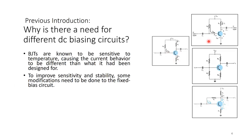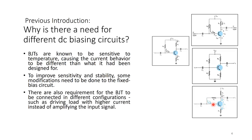The previous video covered this simple fixed bias circuit. What we will do throughout this video and future videos is: first, add a resistor at the emitter; then add another resistor between the base and ground; and later look at what happens with a resistor from the base to the collector. There are also requirements for BJT to be connected in different configurations, such as driving a load with higher current instead of amplifying the input signal.